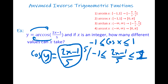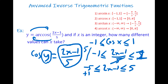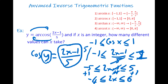Multiply all sides by 5: −5 ≤ 2x−1 ≤ 5. Add 1 to all sides: −4 ≤ 2x ≤ 6. Divide all sides by 2: −2 ≤ x ≤ 3.